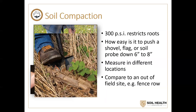In healthy soil, you should be able to get a probe in pretty easily — meaning you have no restrictive layer. Degraded soils have a compacted layer. Modern agriculture has gone across much of our farmable acreage and created a layer at about six inches that's hard to get through, with greater than 300 pounds of pressure resistance. When we use rippers to get through that, we're only pushing the restricted layer deeper. Compare it to someplace outside the field — a fence row, a wooded area — somewhere that hasn't been disturbed. We accept degraded conditions as being the norm when they don't have to be.